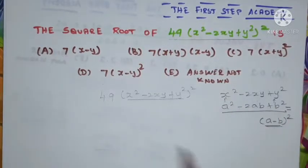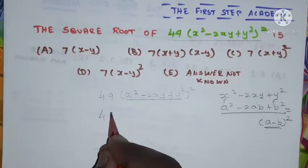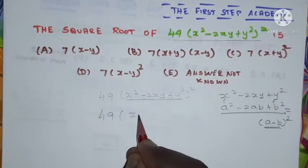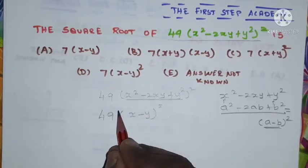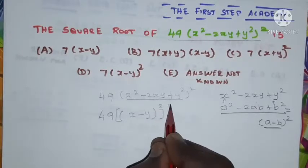Now I'm going to apply this formula over here. So 49 into (x minus y) whole squared, squared.